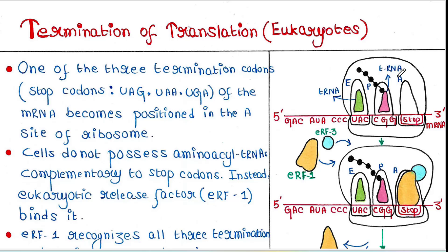Once the ribosome reaches the stop codon — it might be UAG, UAA, or UGA — it gets the stop signal, meaning it is time to finish the translation process. The stop codon fits into the A site of the ribosome. We know that the ribosome contains three sites or pockets: A, P, and E. So the stop codon is now in the A site.